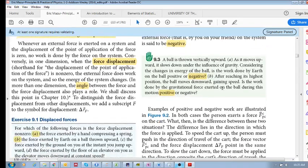So let's look at some of these examples here. Checkpoint 93: A ball is thrown vertically upward. As it moves upward, it slows down under the influence of gravity.